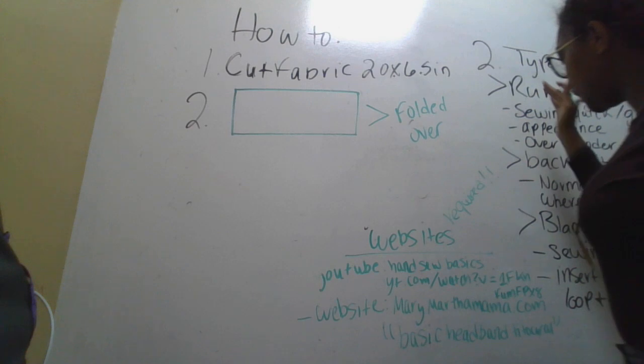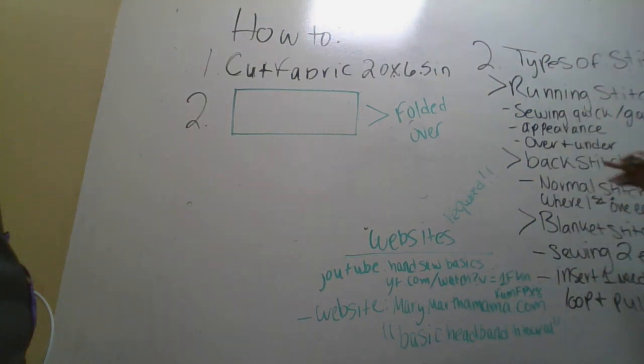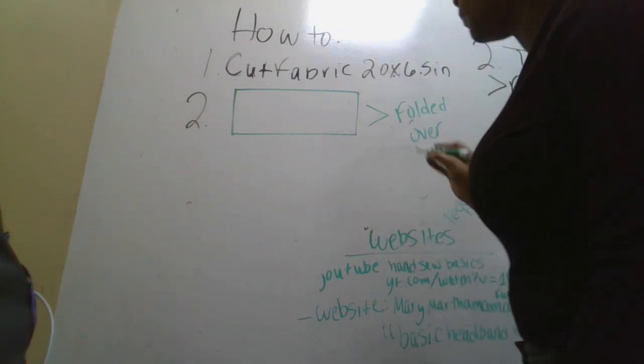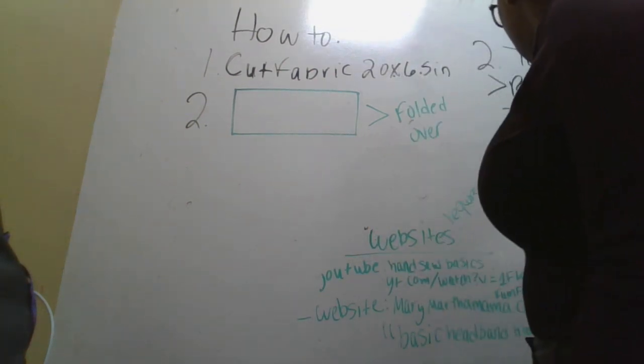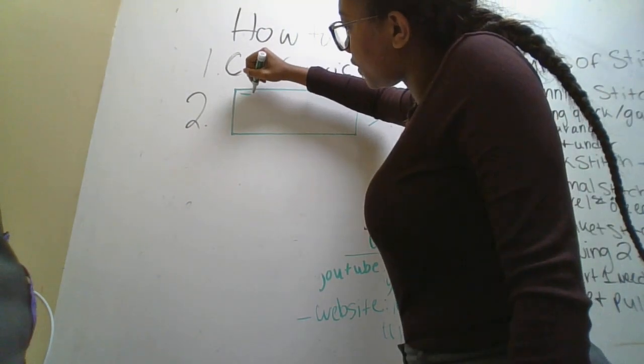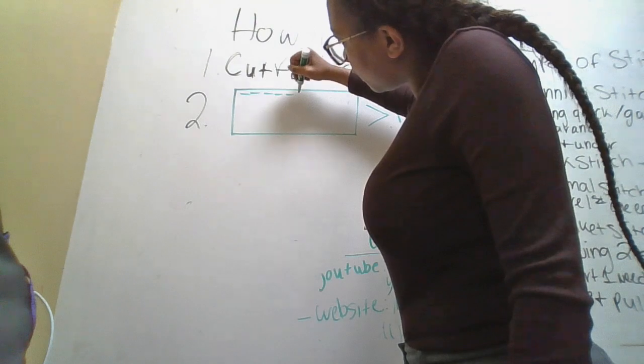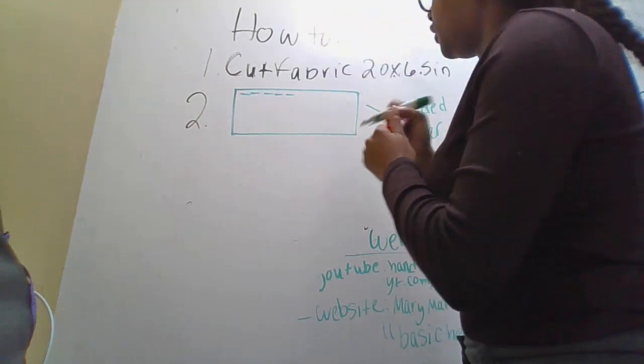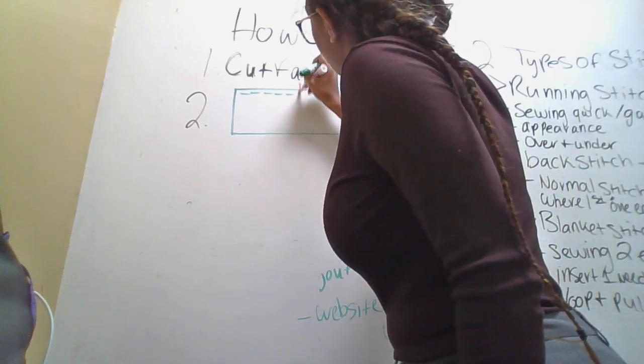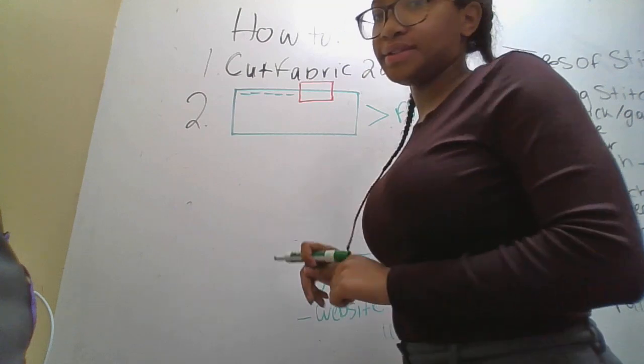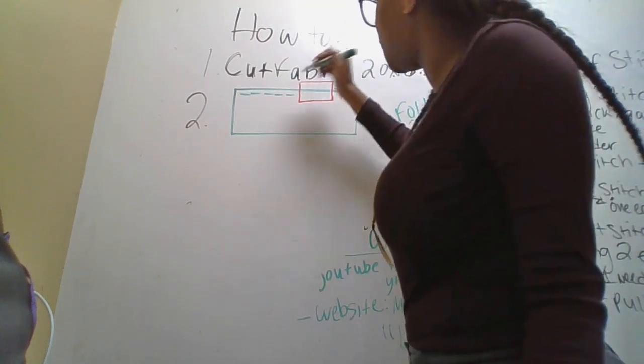You will use any of these types of stitches. Running stitch, backstitch, blanket stitch. You get to choose. For this, I'm going to use a backstitch. I'm going to use this one. You'll see, right here. This red box is going to have no stitching. So, you will tie this off here and then some more here.